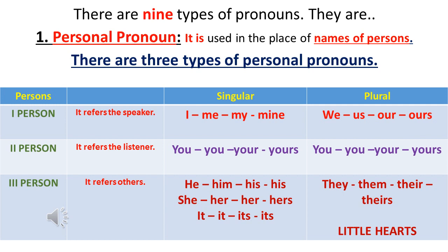Let's have a look at the first person. The first person refers to the speaker. If the speaker is one person, they call themselves using the words I, me, my, mine. If the speakers are two or more, they refer to themselves using the words we, us, our, ours.